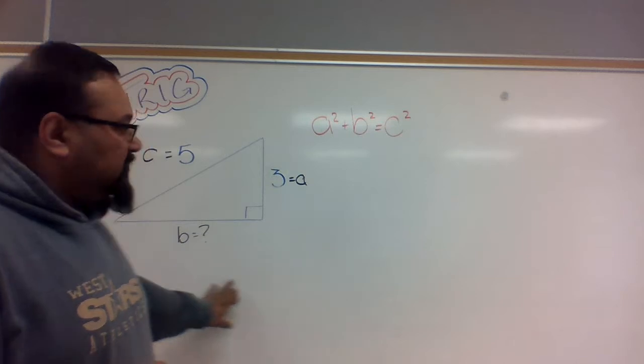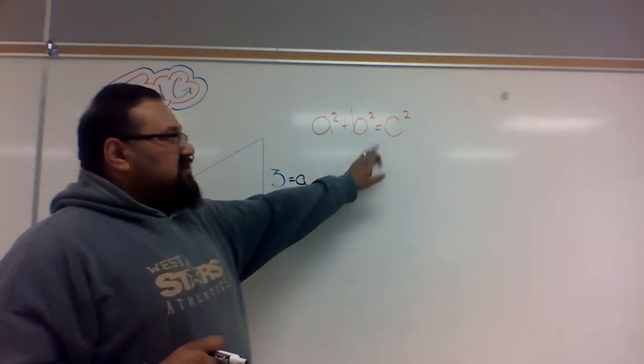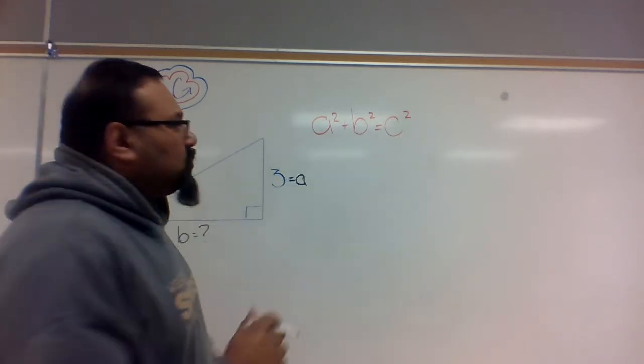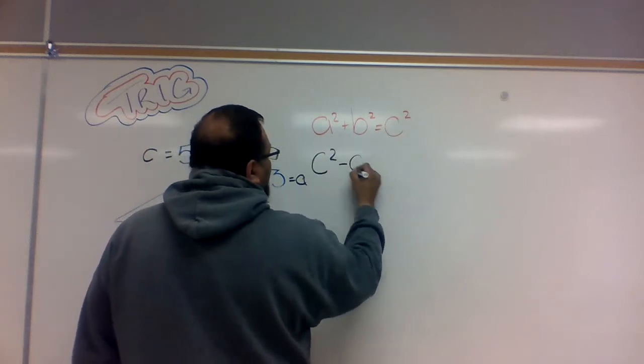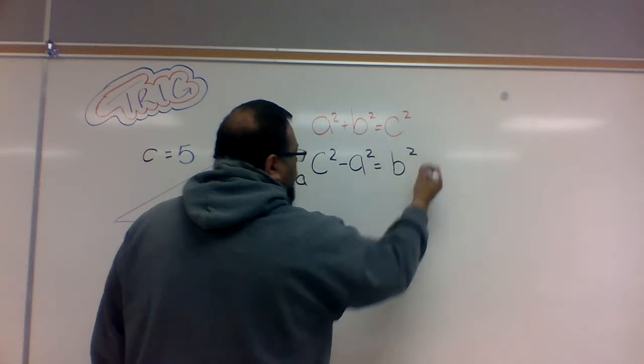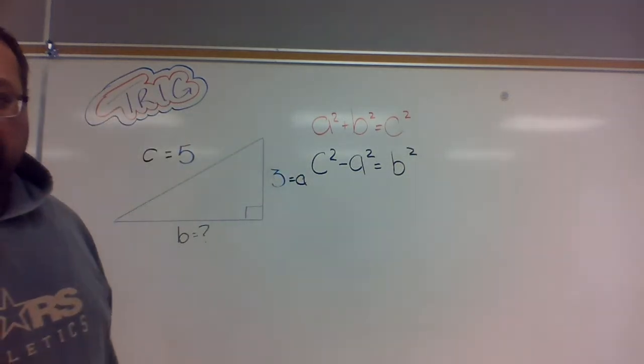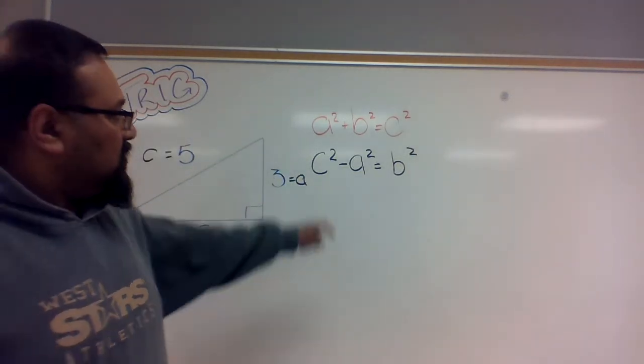We manipulate the formula. I need to find B, which means I need to subtract. I need to change this formula to state C squared minus A squared equals B squared. Simple manipulation of the formula. You see the opposite.